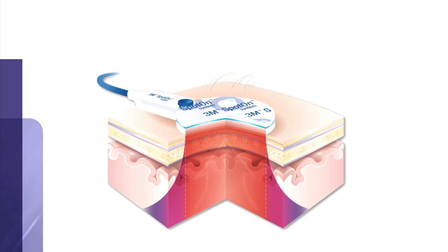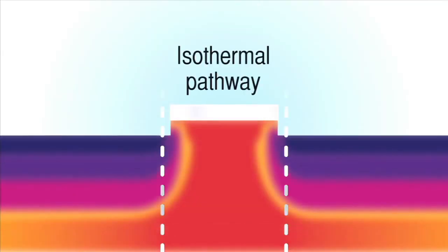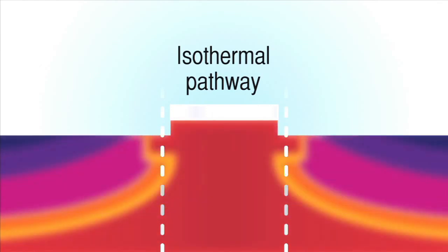In a patient monitoring system, provision for two channel temperature measurements are usually made. The temperature probes are skin, rectal, esophagus and delta temperature measurements.